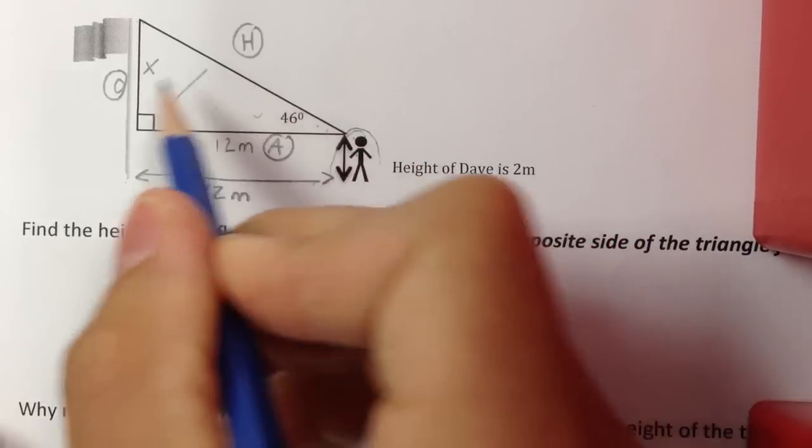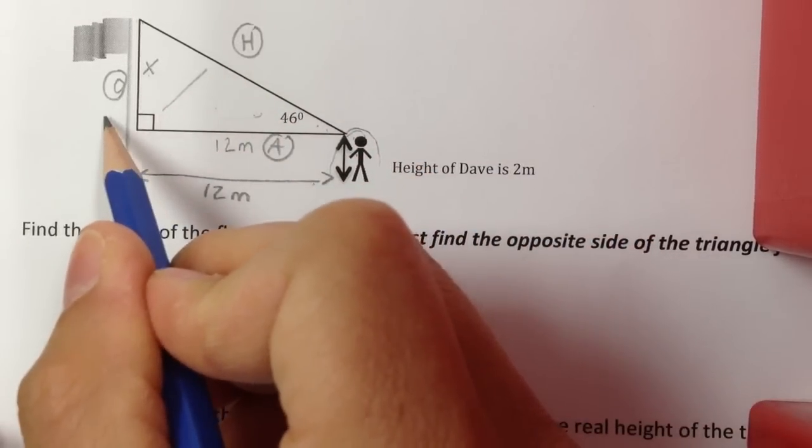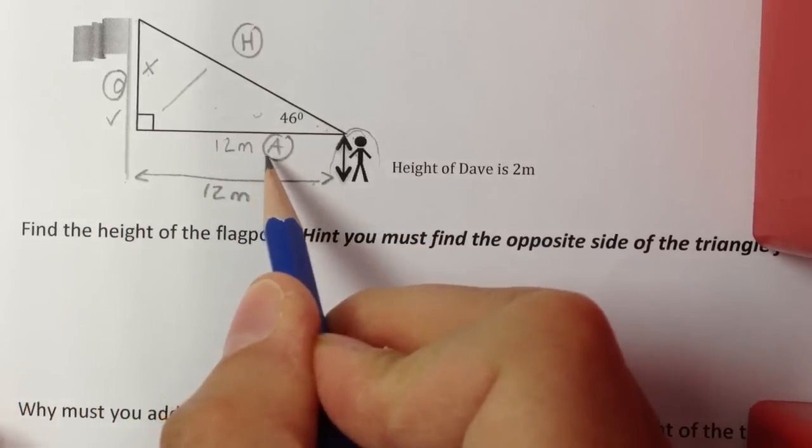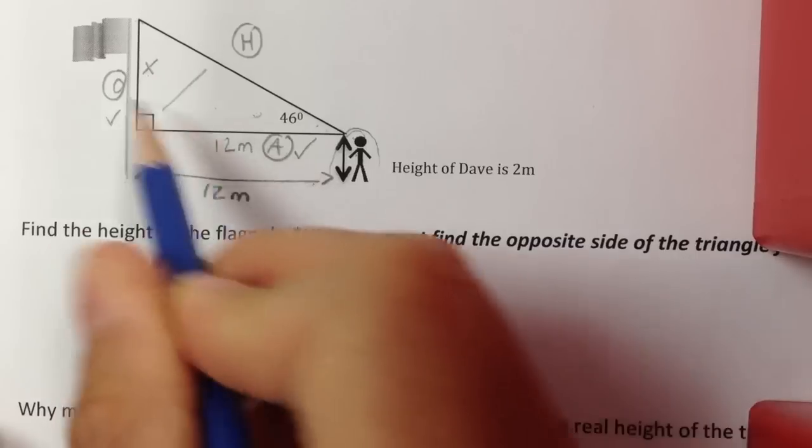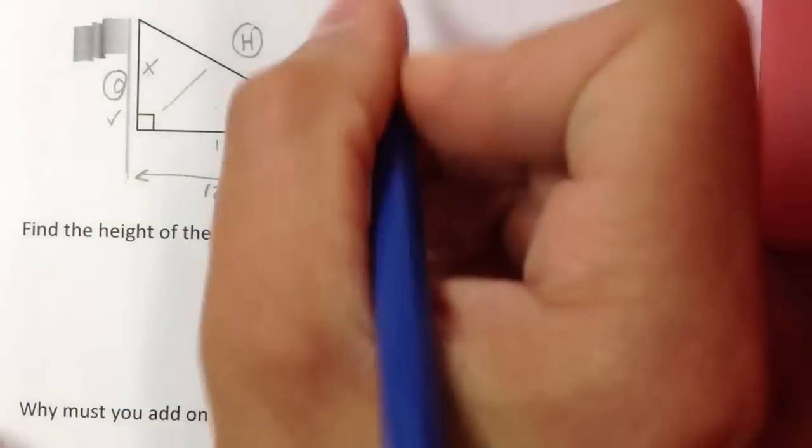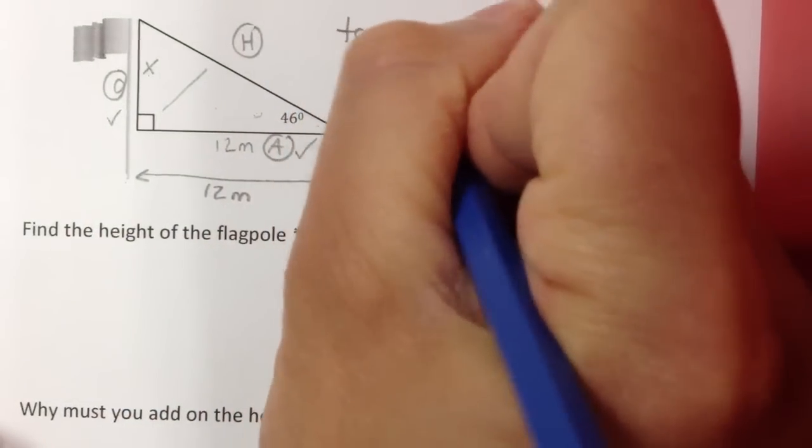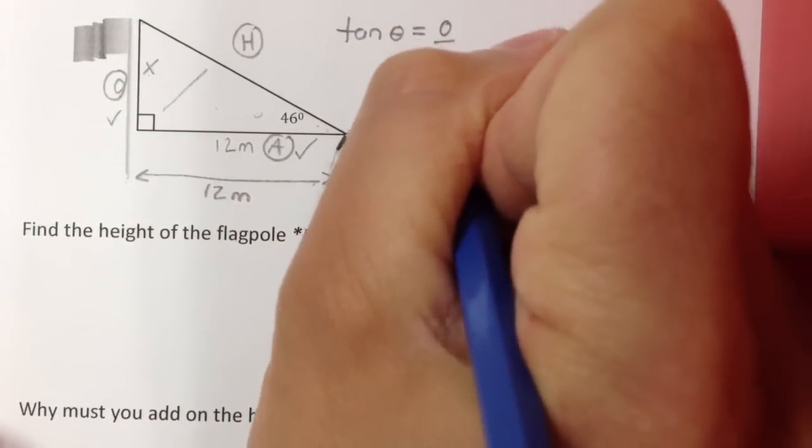So you think about which two sides am I using. I want to find the x so I have to use o. And I have to use the a because that's the only other piece of info I know. So I'm going to use o and a so I'm going to use tan. So it's going to be tan of the angle equals o over a.